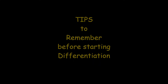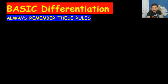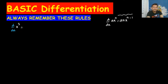Before starting the exercise, please always remember these rules — they will definitely help you. I always discuss these rules before starting exercises. The formula of differentiation is: d/dx(xⁿ) or d/dx(a·xⁿ) equals n·xⁿ⁻¹ or a·n·xⁿ⁻¹ respectively. This is the formula of differentiation.